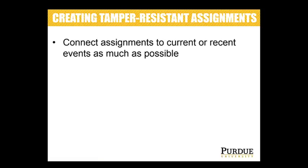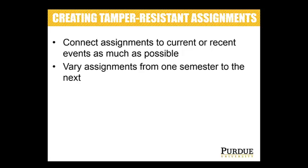In creating assignments, there are some things you can do to make cheating more difficult. If possible, connect your assignments to current or recent events. In the humanities and liberal arts, this might mean students write papers or do projects about a recent controversy or speech. If it's within the last few weeks, it's going to be much more difficult for them to find an old paper or online project they can borrow and use as their own.